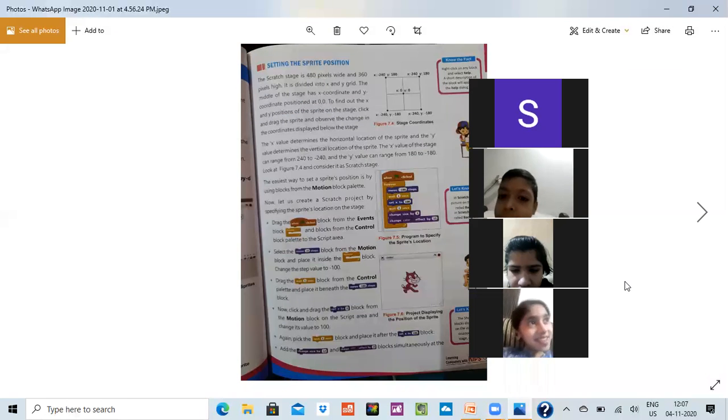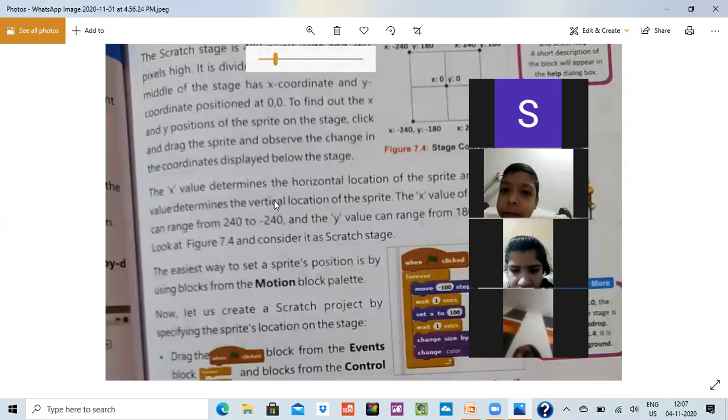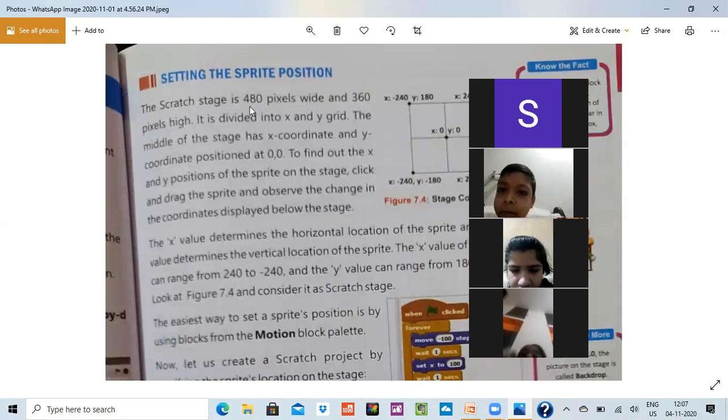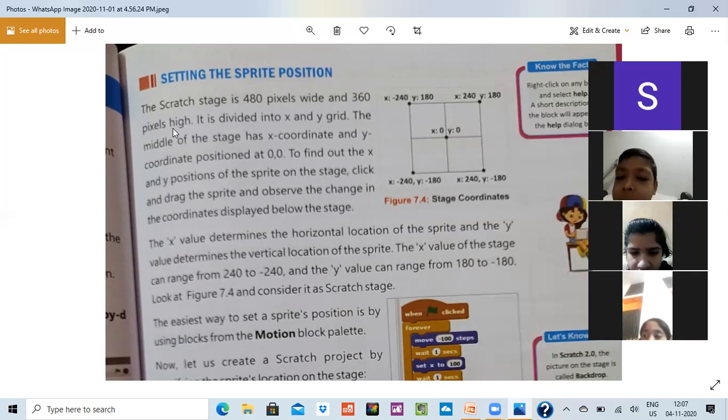Now we are talking about setting the sprite position. When we have to set the sprite position, what is the way? The Scratch stage is 480 pixels wide and 360 pixels high. See, this is 240 and one is 180. Everything is like this only. It is divided into X and Y grid.